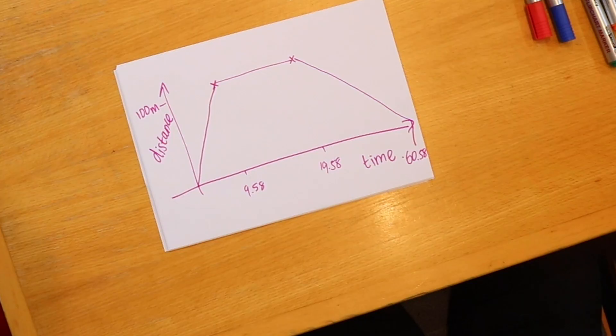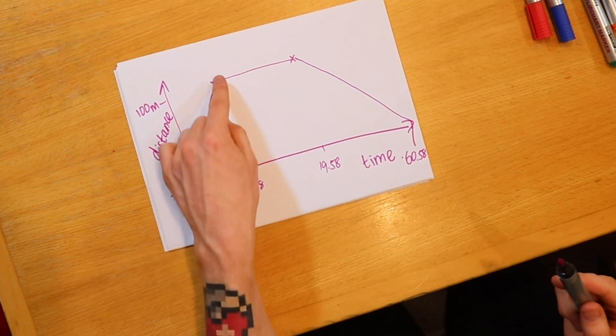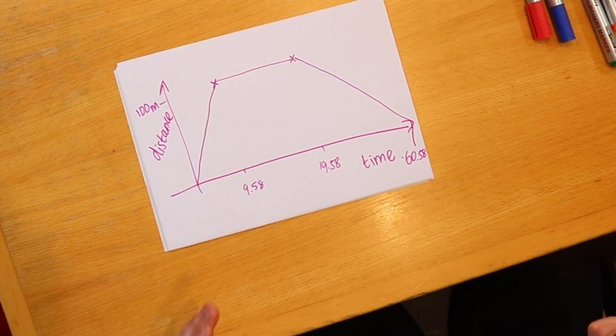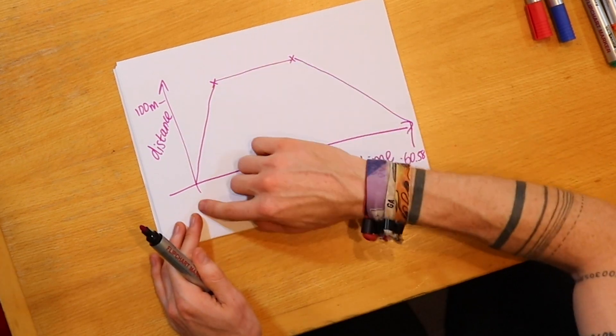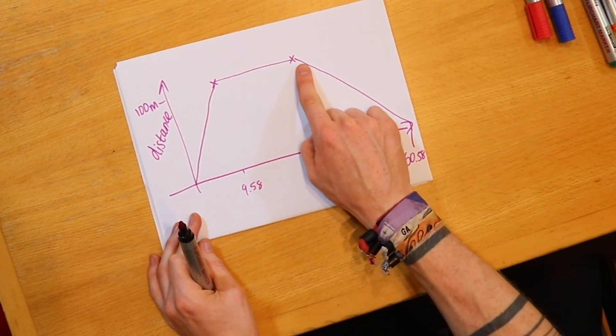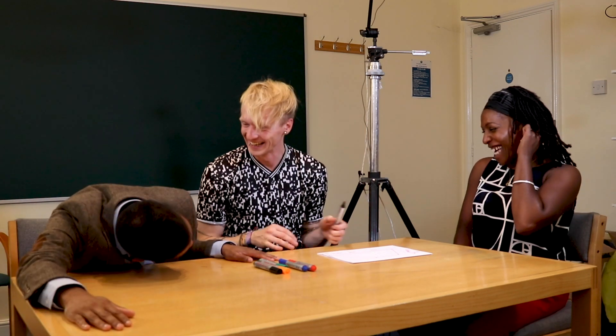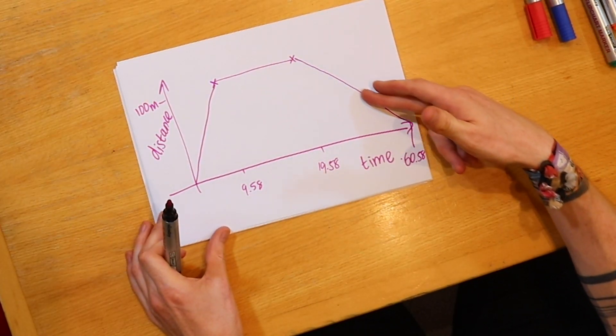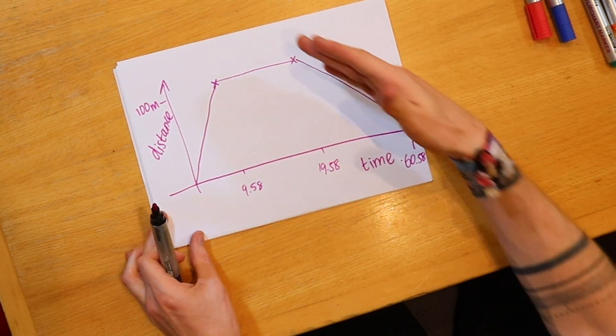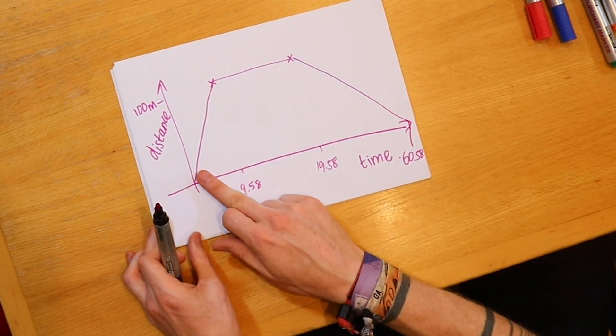The steepness of the line tells us. The gradient — the slope of the line — represents his speed. Here he's going really quickly, so this is a steep line. And this one is flat — so what's his speed when the line is flat? Zero. Because he's lying on the floor, not moving, probably breathing heavily. Then he starts to go back to the beginning more slowly, so this line is less steep than the one at the beginning.